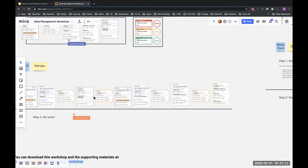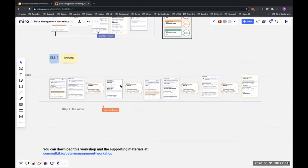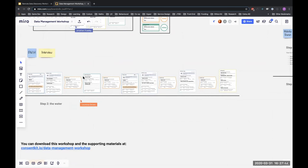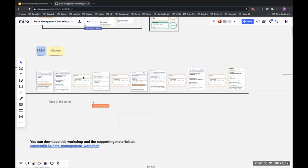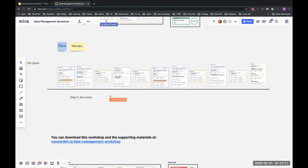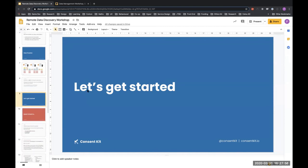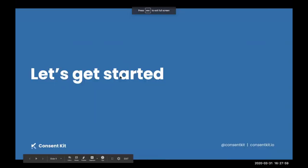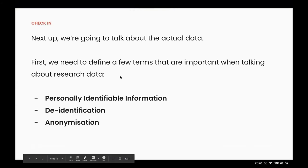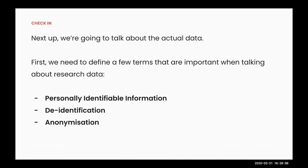In reality this map could be more complicated — you might have multiple transfer points and things might loop back around. That's the case of trying to figure that out as you go through it. I wanted to talk a little about the actual data. If the pipes are the system, the data is like the water that flows through it, and that changes and adapts over time. I want to define a few terms: personally identifiable information, de-identification, and anonymization.